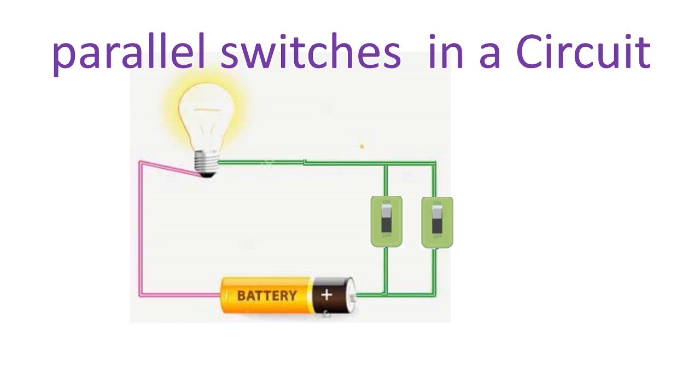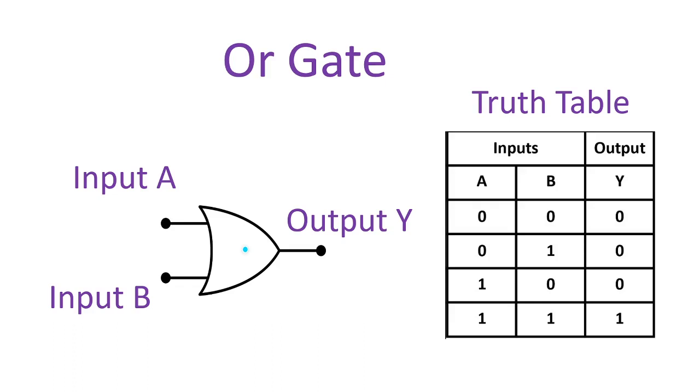And for the OR gate, it behaves according to truth table. The output of OR gate is true if either of the two inputs are true. Otherwise, it's false.